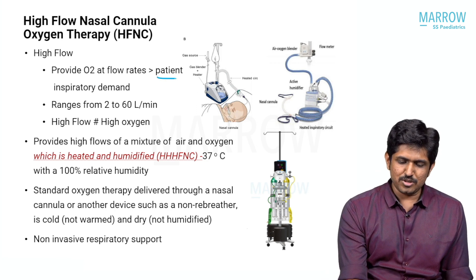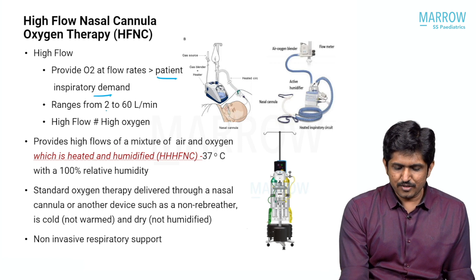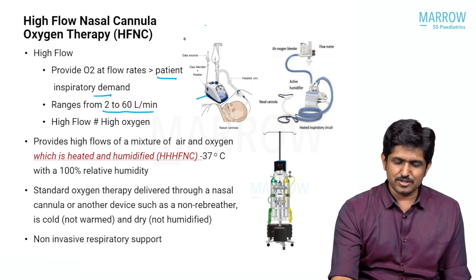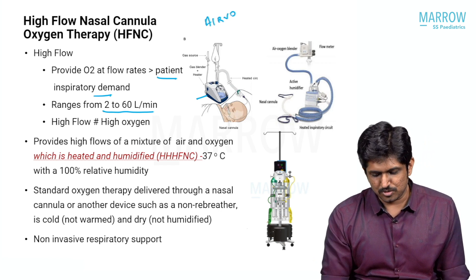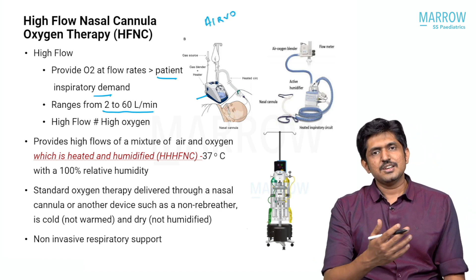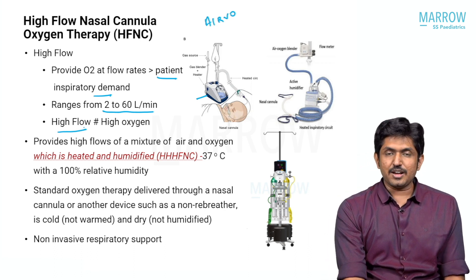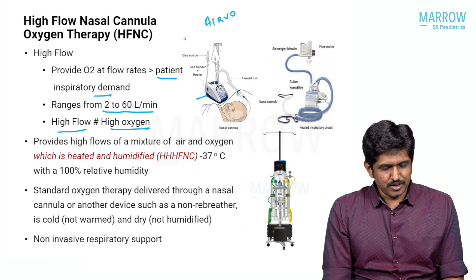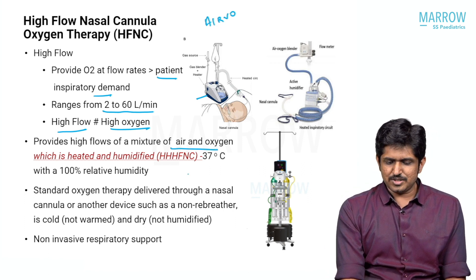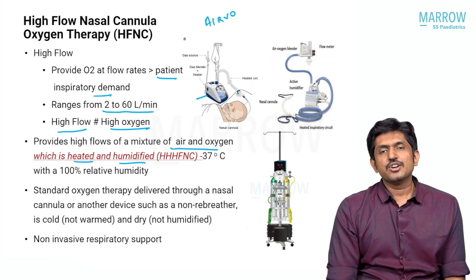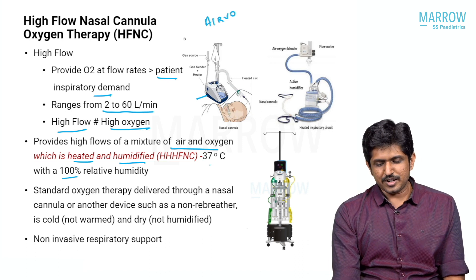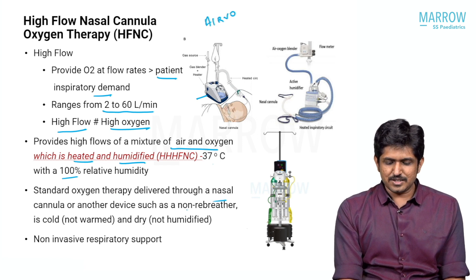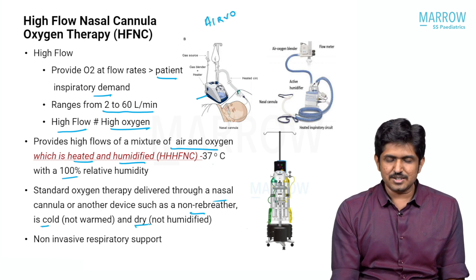Based on this definition, high flow nasal cannula oxygen therapy provides O2 at flow rates more than the patient's inspiratory demand — that is why it is called high flow. The flow range is 2 to 60 liters per minute, delivered by a machine called the AirVO — AirVO 1, 2, and now AirVO 3. You can deliver an FiO2 of up to 90 to 100 percent. It is a mixture of air and oxygen, heated and humidified at 100 percent relative humidity at 37 degrees Celsius, unlike standard oxygen via nasal cannula or non-rebreather mask, which is cold and dry.